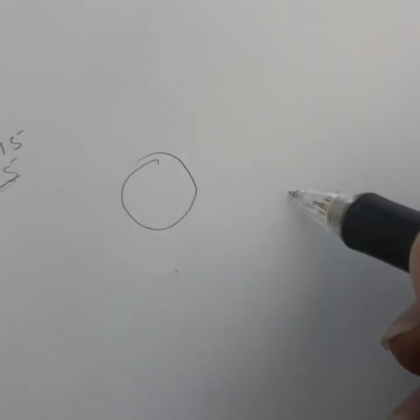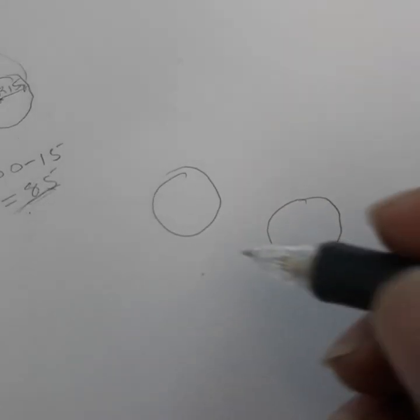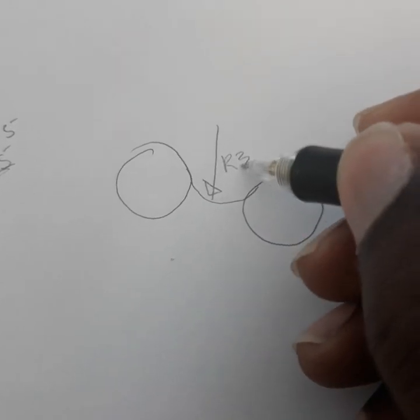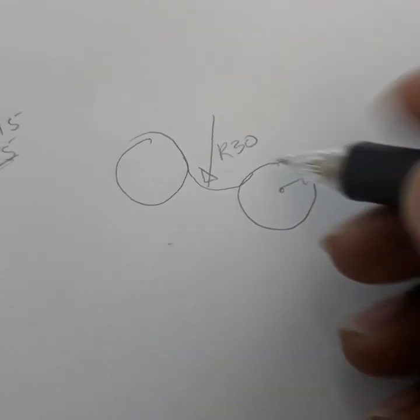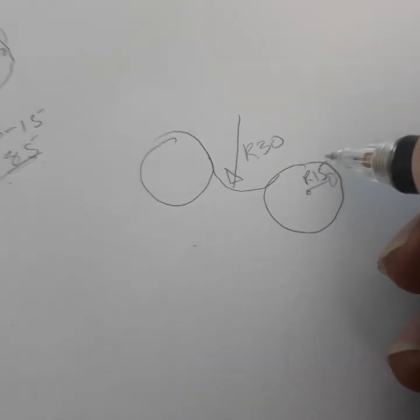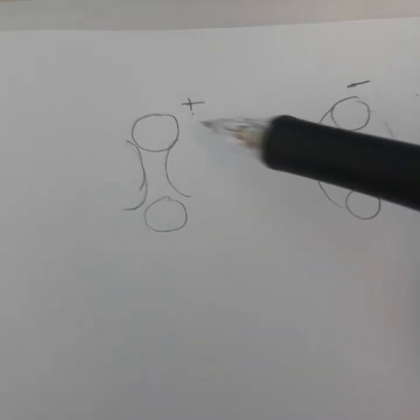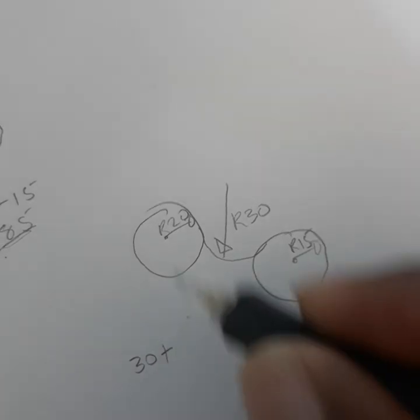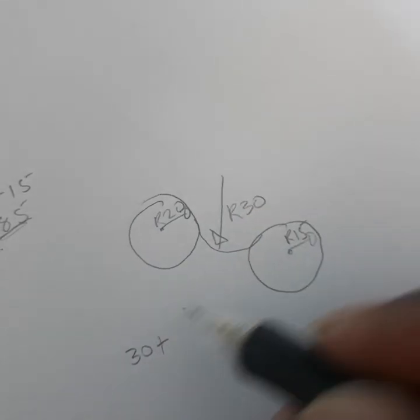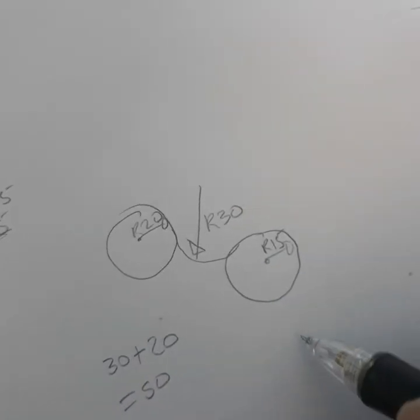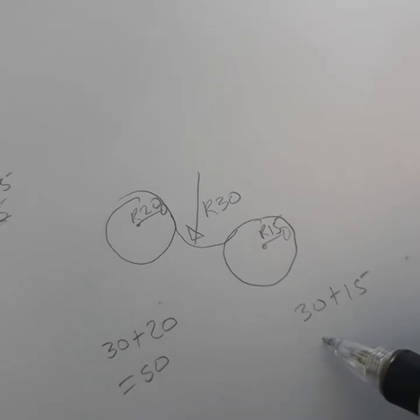Another example: now the cave is going in. The same arc radius is maybe 30, this circle's radius is 15, and this one is maybe 20. Since the cave is going in, I'm going to add. So 30 plus 20 gives 50 for this one, because this curve is touching this circle and this circle. For the other one, 30 plus 15 gives 45.